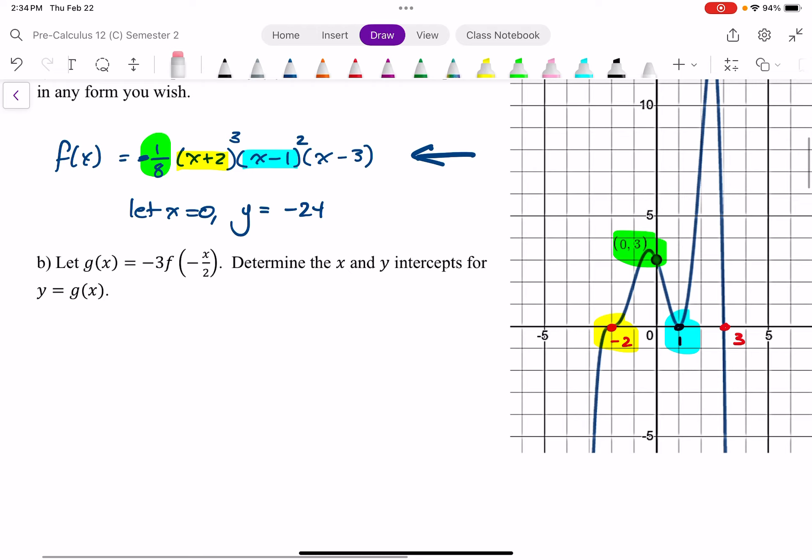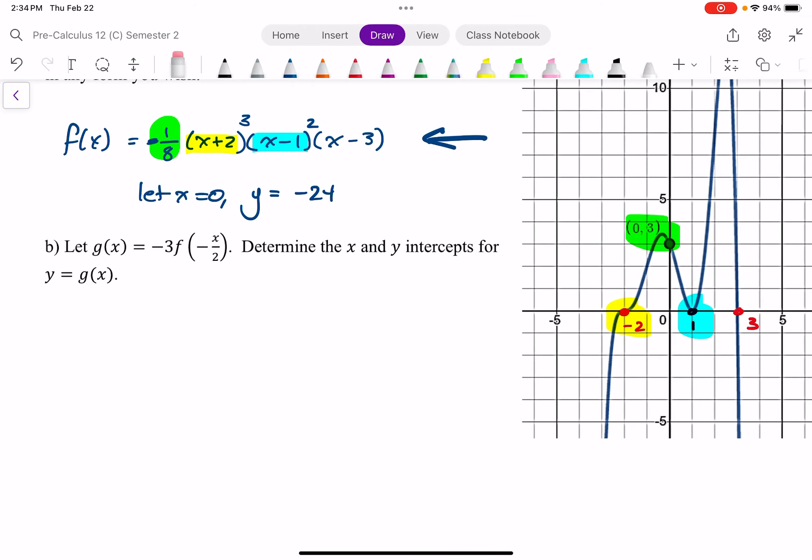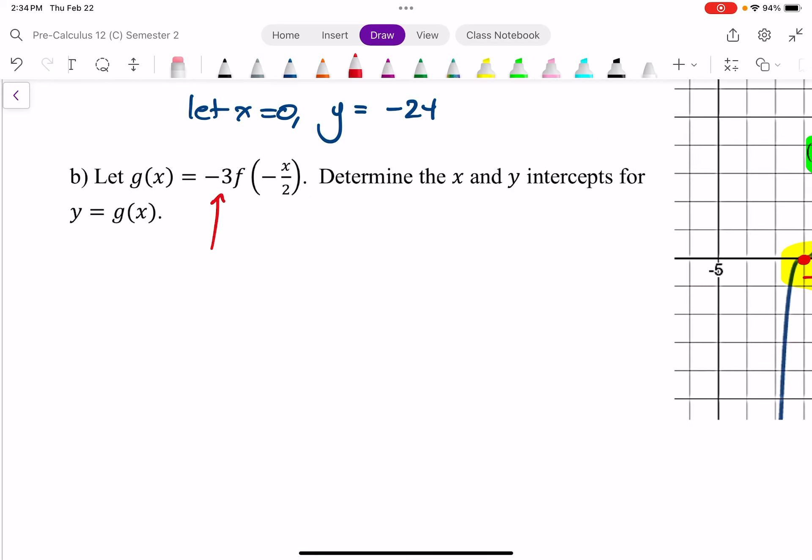All right, so now I have g of x, which is negative 3f of negative x over 2. What are the x and y-intercepts for this? First let's think about the transformations here. That negative 3 there is a vertical reflection and a vertical expansion by a scale factor of 3. And right here, I have a horizontal reflection as well as a horizontal expansion by a scale factor of 2. Because what we see right here, x divided by 2 is the same as x times 1 half. And so the reciprocal of 1 half is 2.